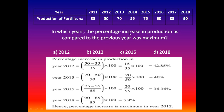Comparing all four percentage increases, the maximum value is 42.85%, which occurred in 2012. So option A is correct: the percentage increase in production compared to the previous year was maximum in 2012.